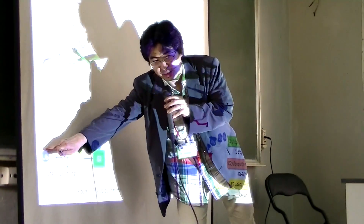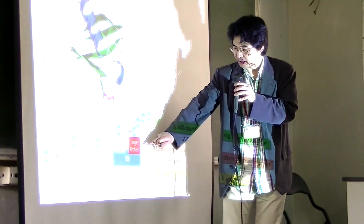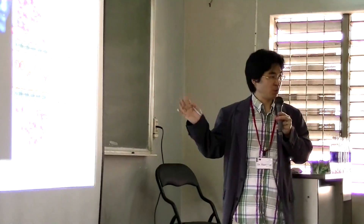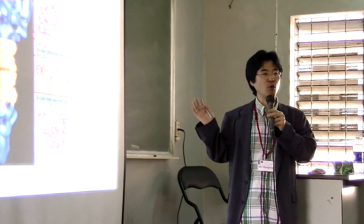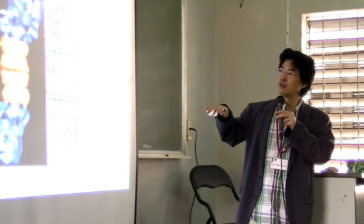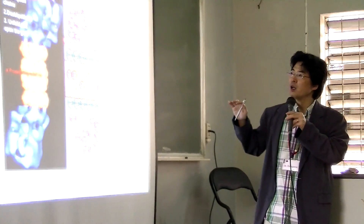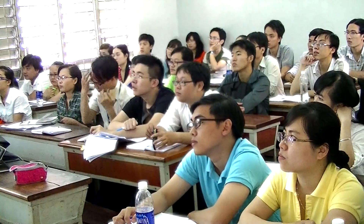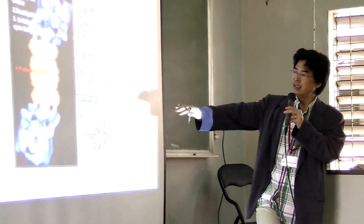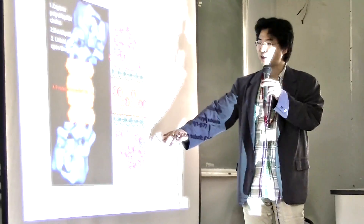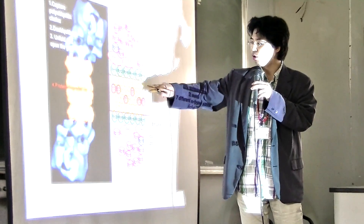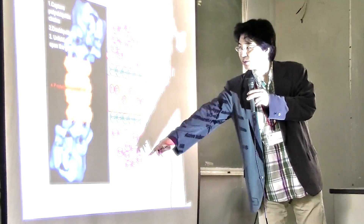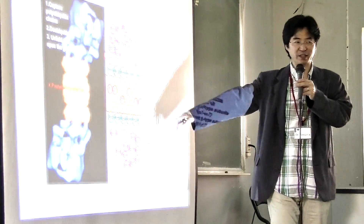The ubiquitinating molecule is linked to target proteins. Target proteins are polyubiquitinated via K48 linkages to direct them for degradation — they are sorted to the proteasome. This is the structure of the proteasome, a very huge protein complex where each unit is a protein.